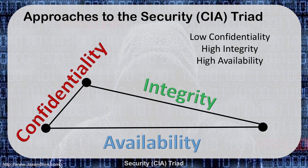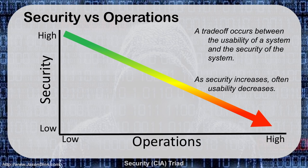What if I have low confidentiality but high integrity and high availability? A public-facing advertising website is a good example. If you go to coca-cola.com or jasondion.com, I want low confidentiality — I don't care if anybody can see it because I want everybody to see it. But I have high integrity because I want the message I'm putting out to be the message you receive — I don't want a website defacement. And I want high availability so you can reach my website 100% of the time, day or night.